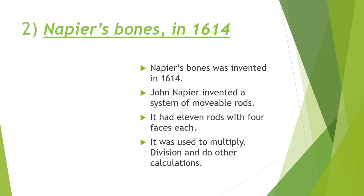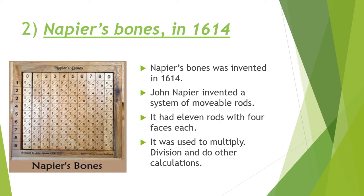Second is Napier's Bones, in 1614. As necessity demanded, scientists started inventing better calculation devices. John Napier invented a system of movable rods that could be used to multiply, divide, and do other calculations. It had 11 rods with 4 faces each. The device was made from bones and was called Napier's rods or Napier's Bones.